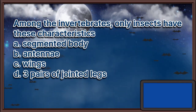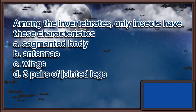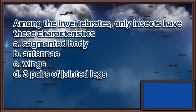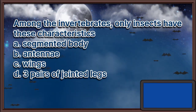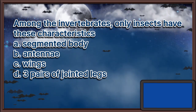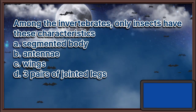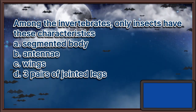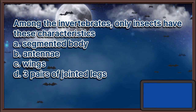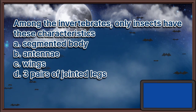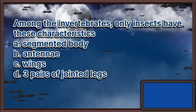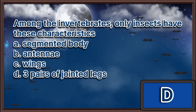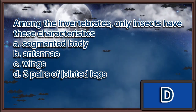Among the invertebrates, only insects have these characteristics. A. Segmented body. B. Antennae. C. Wings. D. Three pairs of jointed legs. The answer is letter D.